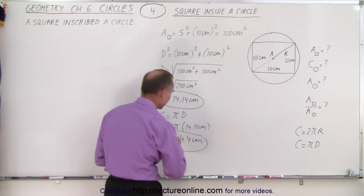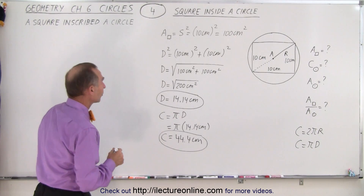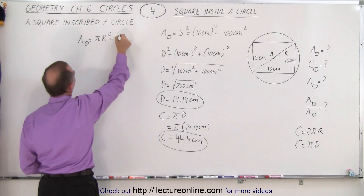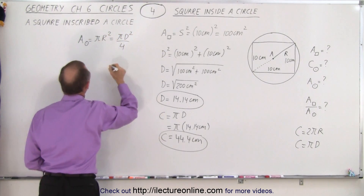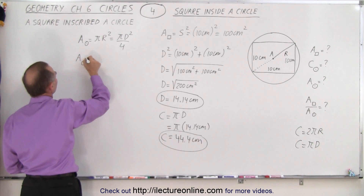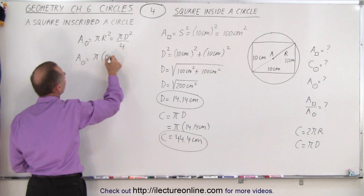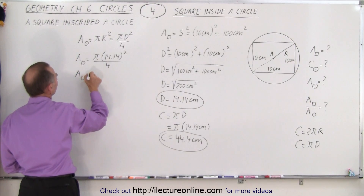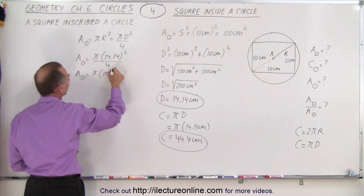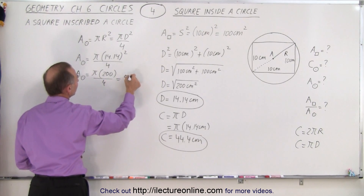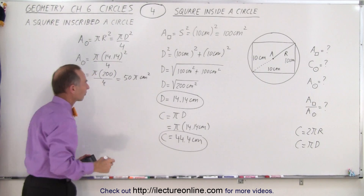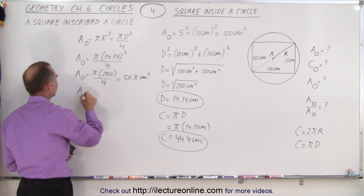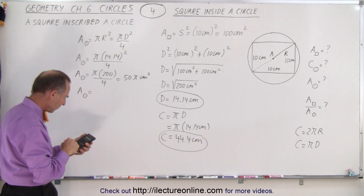Now let's find the area of the circle. The area of the circle is equal to π times the radius squared, which is equal to π times d squared over 4. In this case, the area equals π times 14.14 squared divided by 4, which is π times 200 divided by 4, giving us 50π centimeters squared.